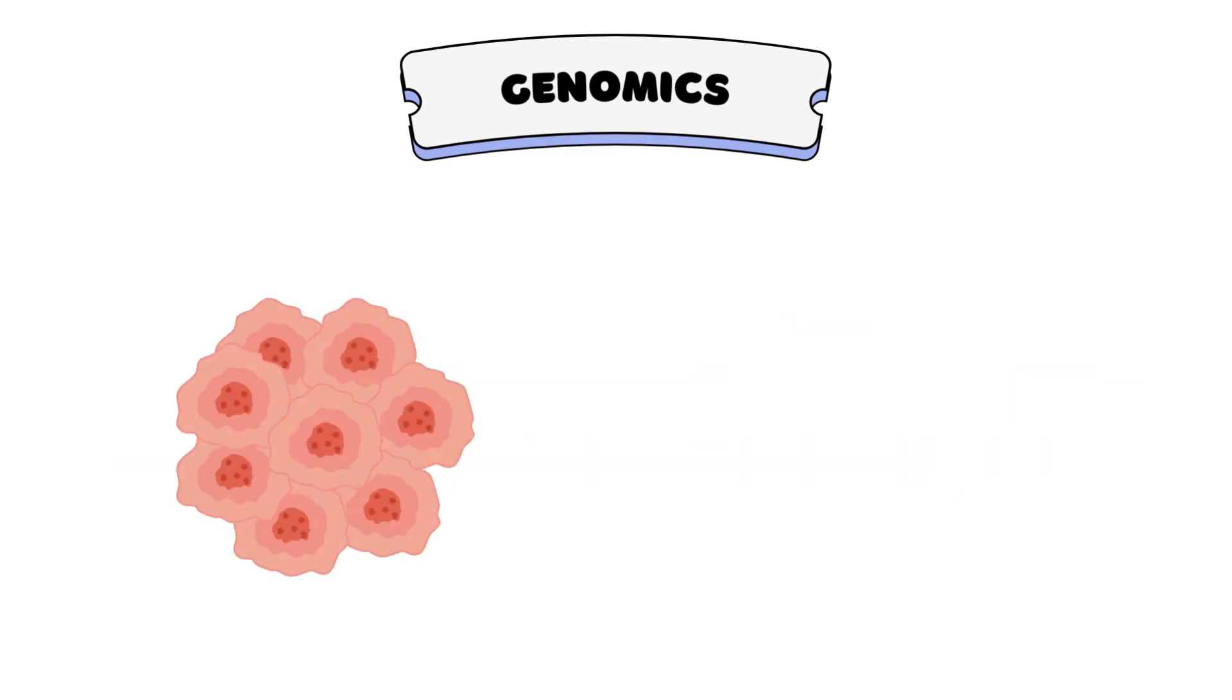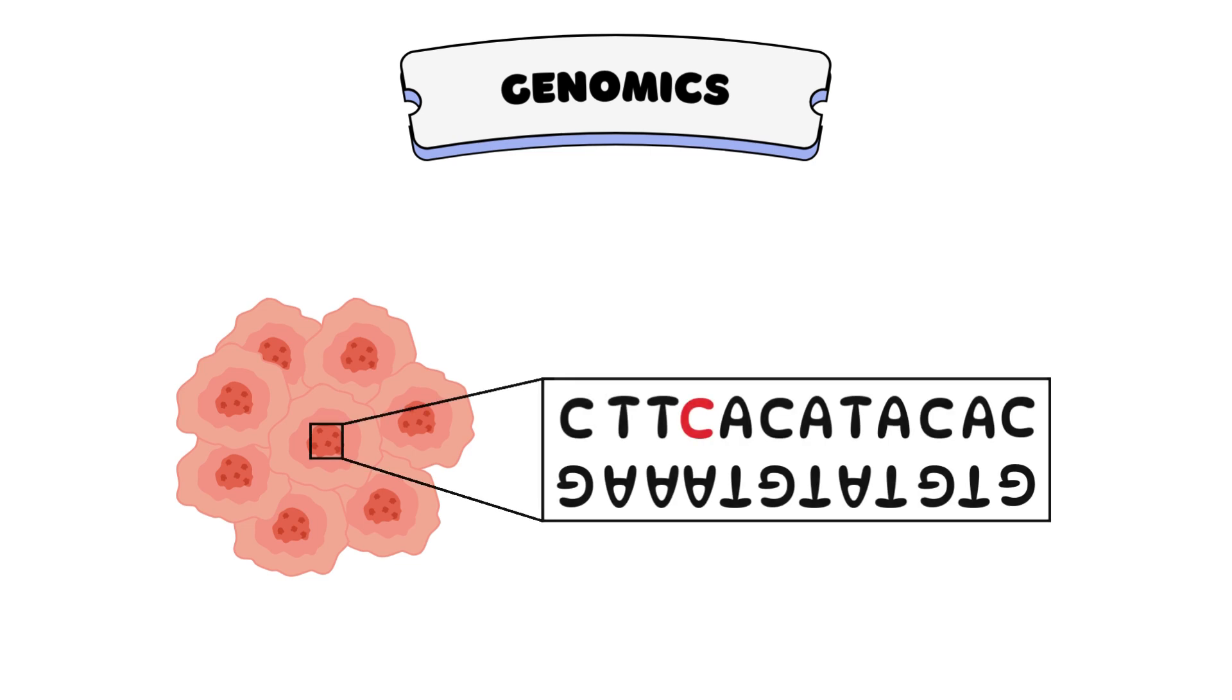In the case of cancer, scientists can analyze tumor DNA to identify mutations that cause the cancer or fuel its growth and target these with specific drugs. But the genetic code is not the only way DNA is influenced by diseases like cancer, which leads us to the epigenome.